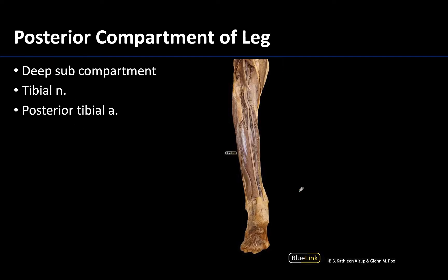There is also a deep sub-compartment of the posterior leg. We are not as concerned with differentiating between the individual muscle bellies here as they are quite difficult to tell apart, but you can see the neurovasculature sitting on top of the muscles of this deep sub-compartment. That neurovasculature includes the tibial nerve — the larger terminal branch of the sciatic nerve — as well as the posterior tibial artery, a terminal branch of the popliteal artery, and the posterior tibial veins following the artery very closely.